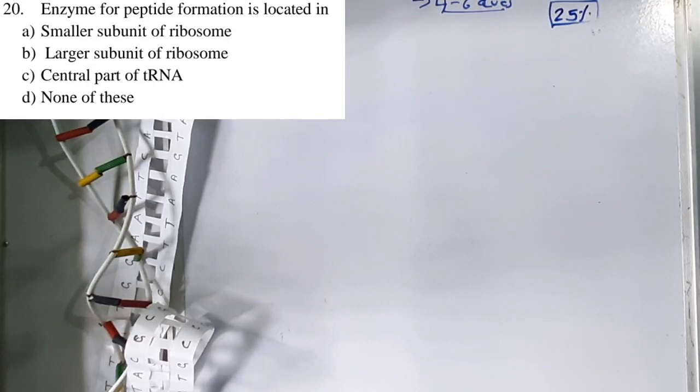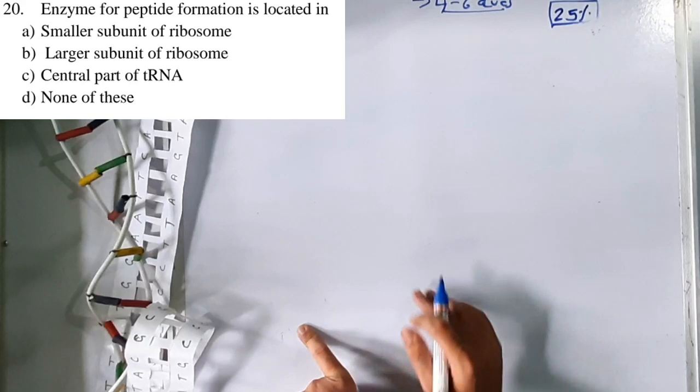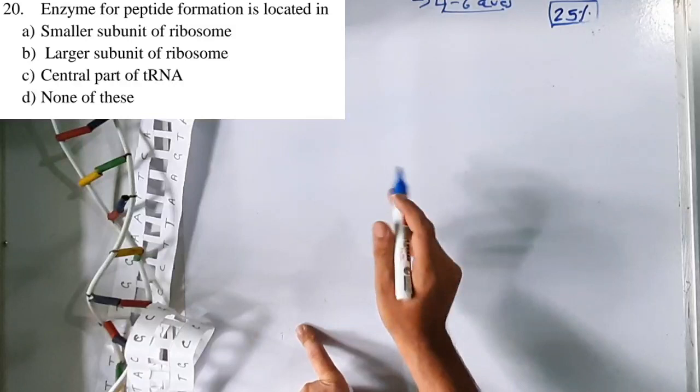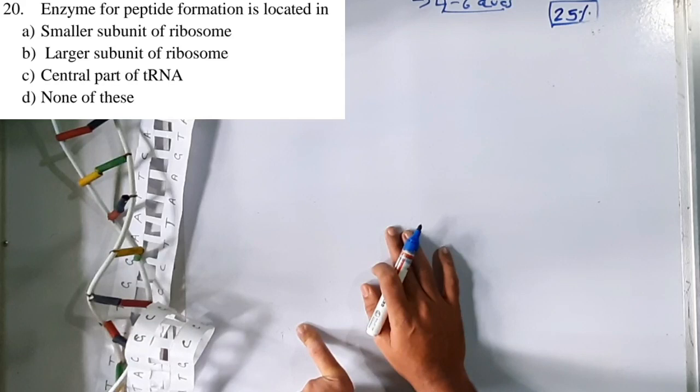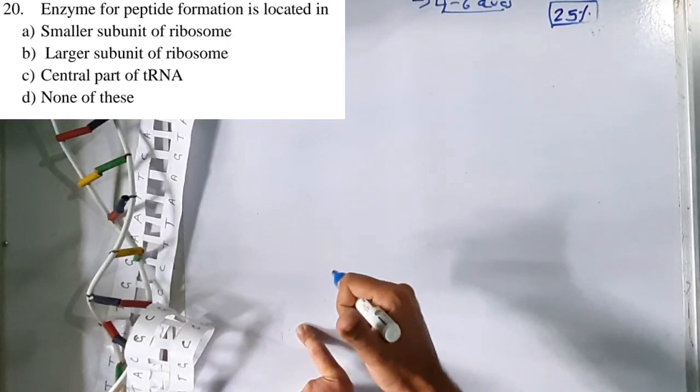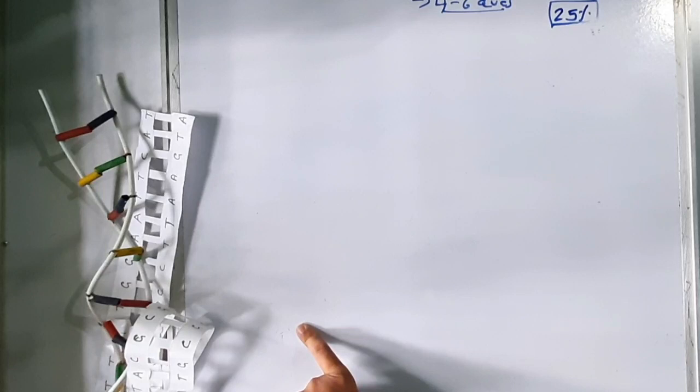Question 20: The enzyme for peptide bond formation (peptidyl transferase) is located in the larger subunit of the ribosome, specifically at the P site. Its function is to link two different amino acids by a peptide bond to form a polypeptide chain. Option B is correct.